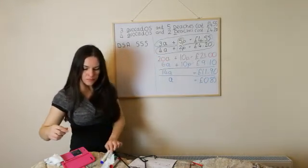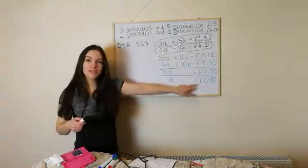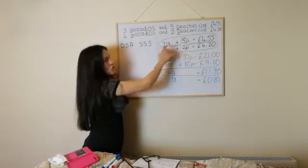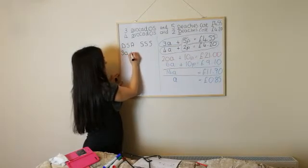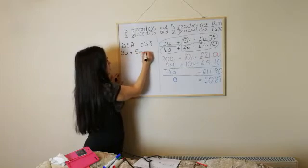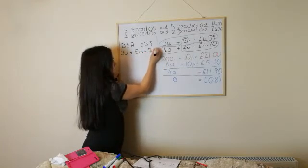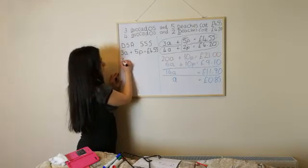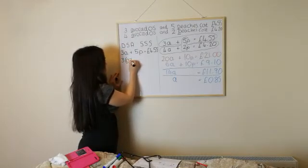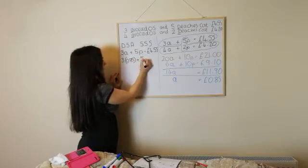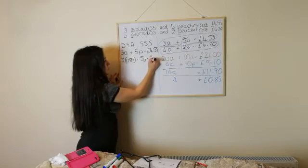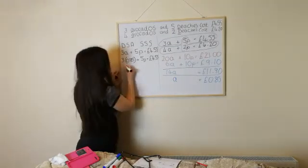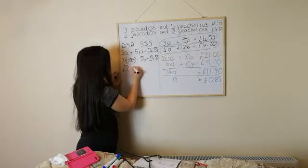So, that's good, that's fine. So, what we then do is, we know one avocado is 85p. So, what I'm going to do is, I'm going to pick one of these equations and I'm going to substitute that in. So, I'm going to pick the top one here. Where three avocados and five peaches cost £4.55. And as an avocado is 85p, I'm going to replace this with 85p.